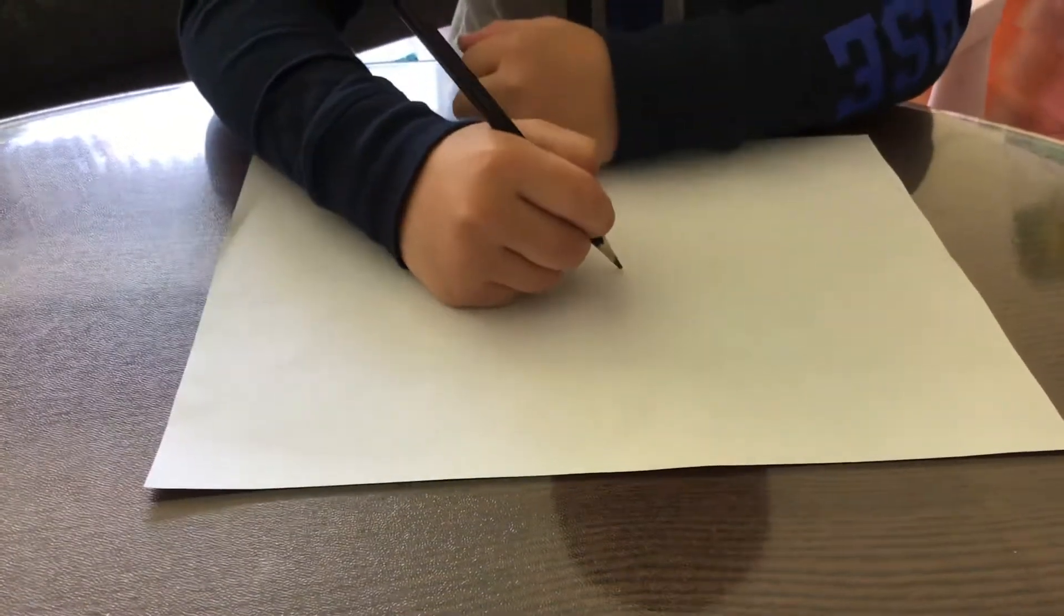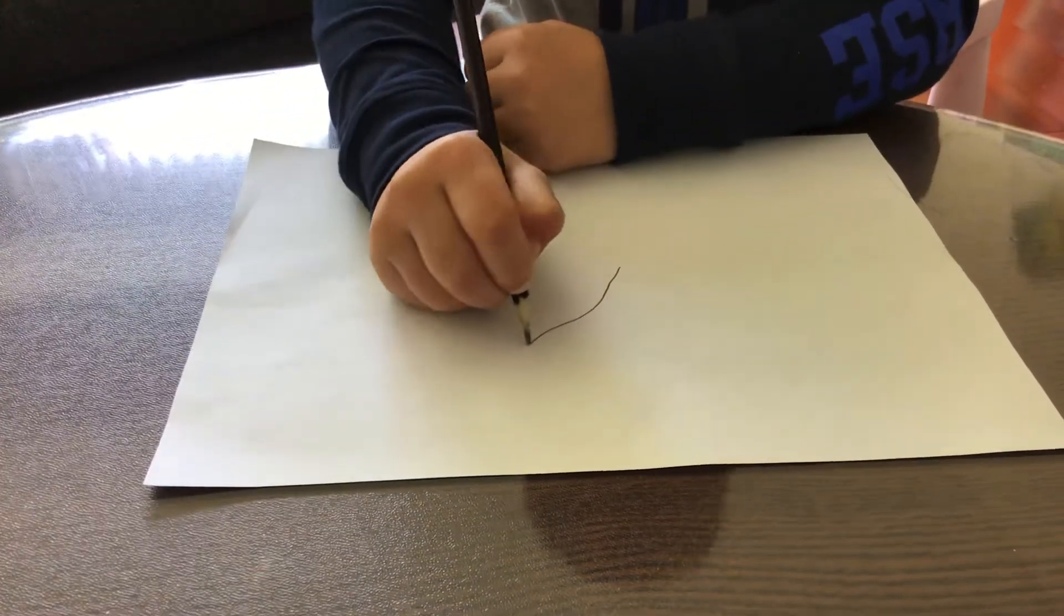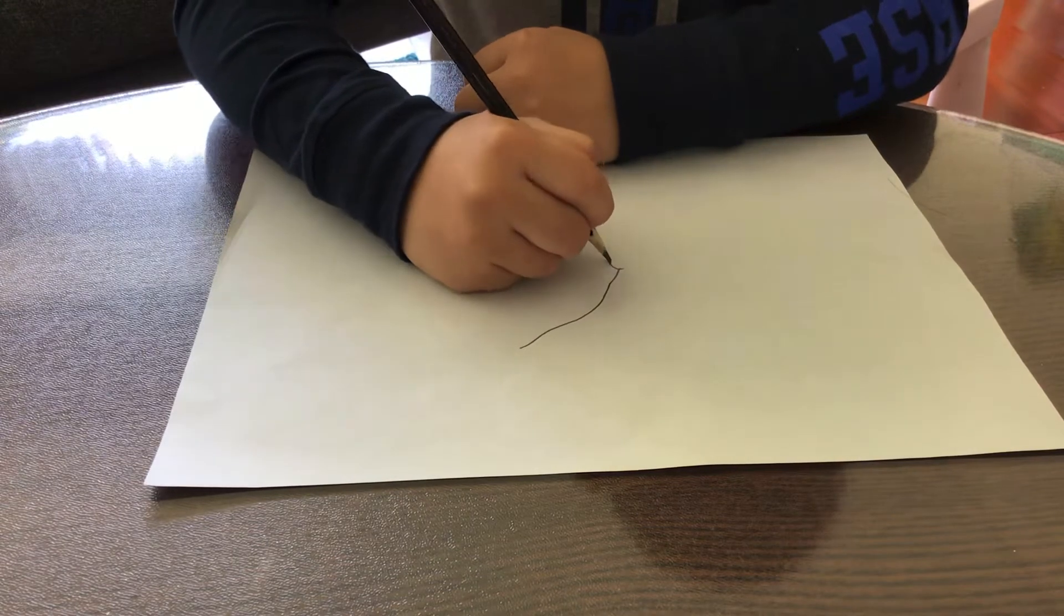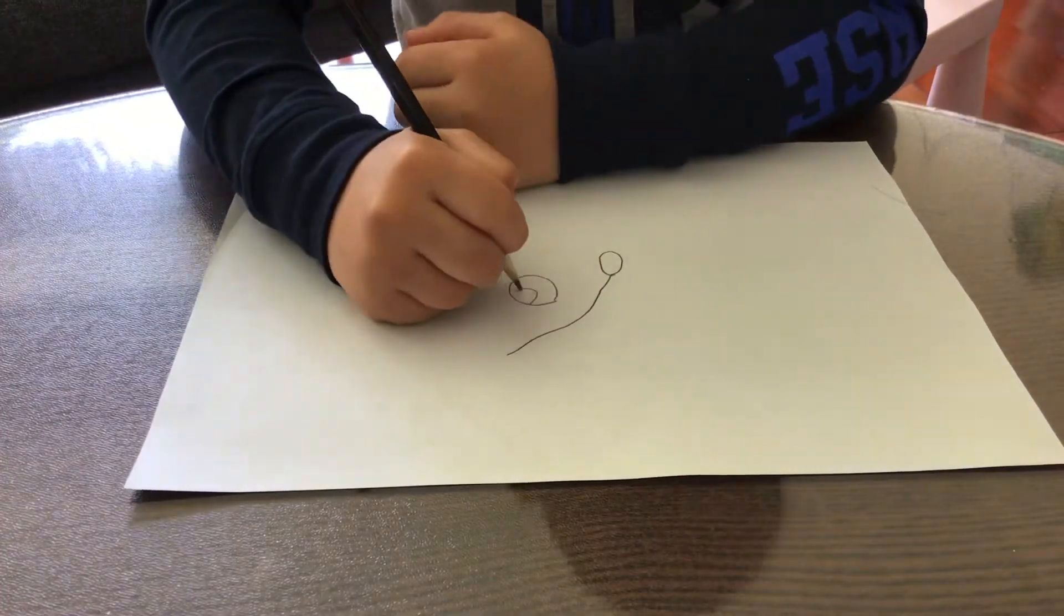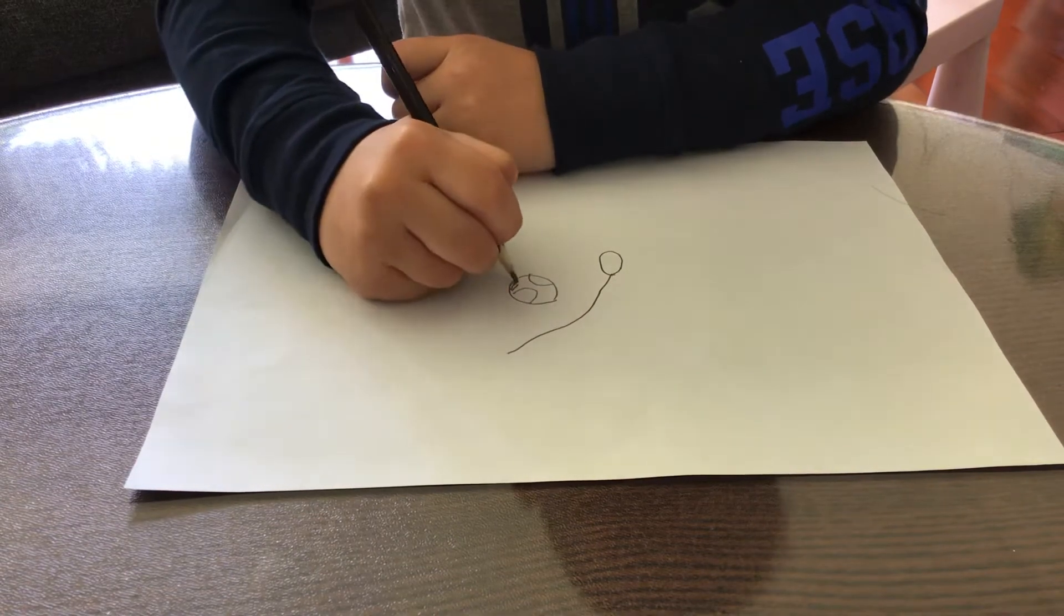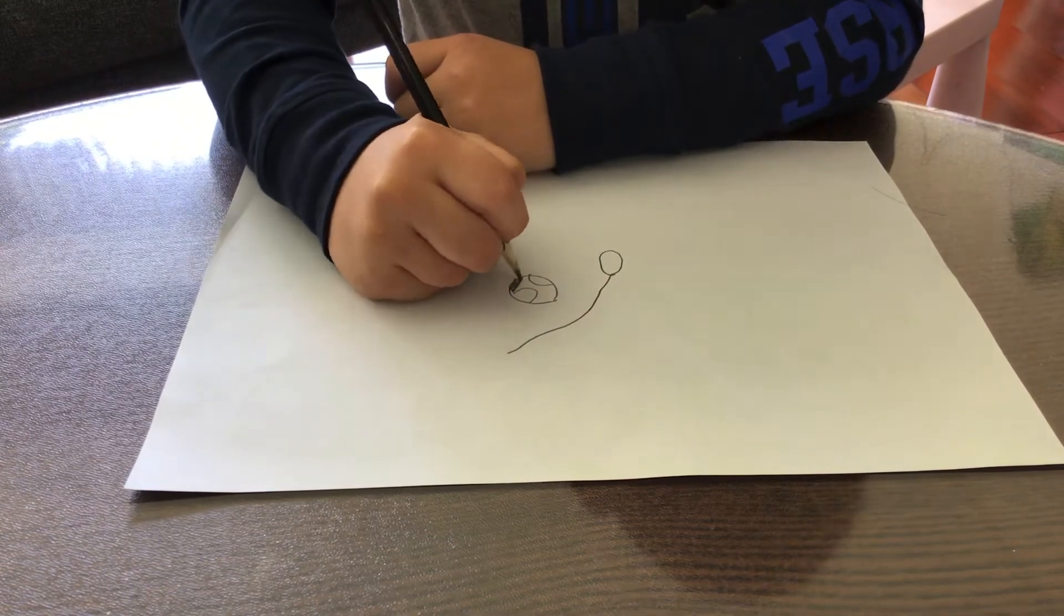So, first we draw, then we draw his nose, we draw his cute little eyes, and color it black.